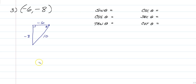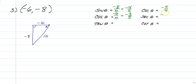After we find that our hypotenuse is 10, set up all of your sides — opposite, adjacent, hypotenuse. For sine, you should have negative 8 over 10, which is negative 4 fifths. The reciprocal — cosecant — is negative 5 fourths. Cosine is adjacent over the hypotenuse: negative 6 over 10 gives us negative 3 fifths, and secant is negative 5 thirds. Tangent is opposite over adjacent: negative 8 over negative 6, which simplifies to positive 4 thirds. Cotangent is 3 fourths.